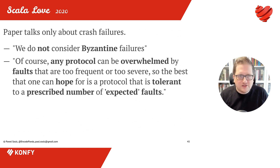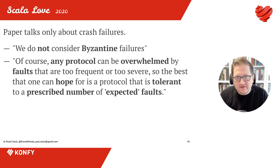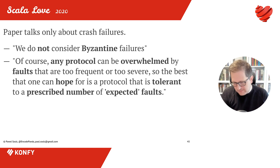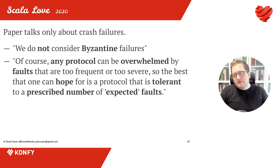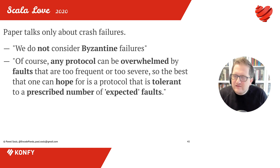When we talk about failures in distributed systems literature, there are different types of failures that a node may have. The most extreme would be Byzantine failures — not only may the node fail, but it may also act arbitrarily, even maliciously. We can consider a node that's just not keeping itself consistent to the protocol, but actually acts as an evil process trying to do evil things. The authors of the paper realized that obviously every protocol can be overwhelmed with a tremendous amount of fault — but could they at least prove it's possible to achieve consensus with just one faulty process?